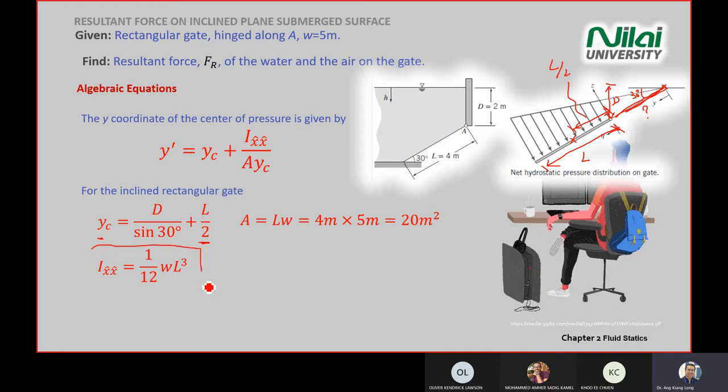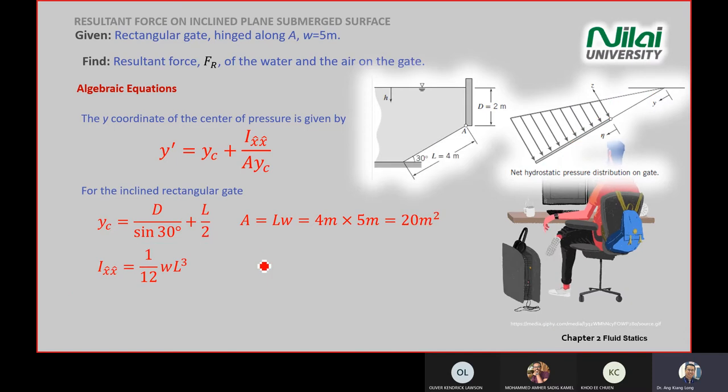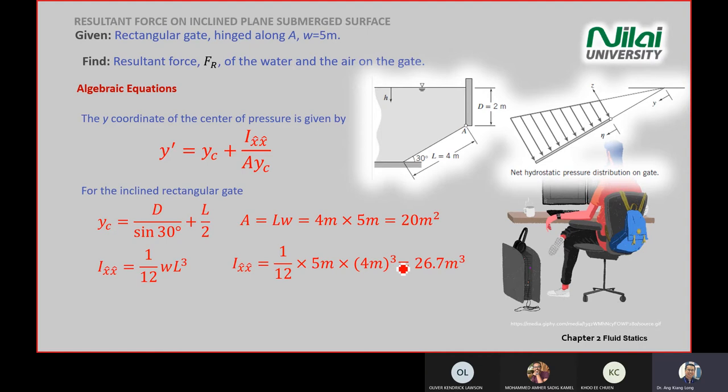Ixx equals 1 over 12 W L cubed. Again, where you get this equation. You get from the appendix inside the module. You open up, go and find a second moment of area for rectangular plate. This is rectangular plate. This equation to find Ixx will be given 1 over 12 W L cubed, standard. This one is just refer to the table to find the Ixx for rectangular. I think you learned about this one in your static module already.